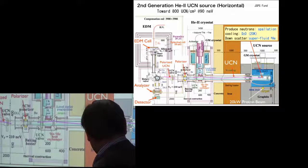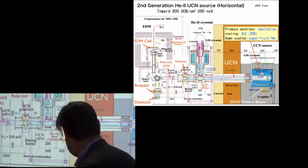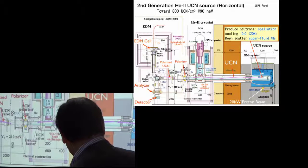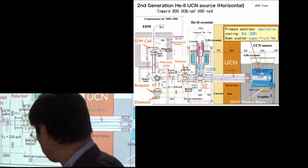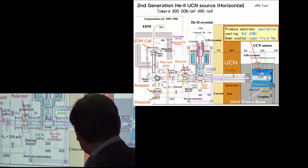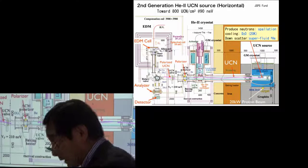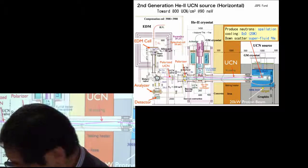And neutrons are slowed down by the graphite moderator, and then room temperature and low temperature heavy water. Then finally, the cold neutrons are downscattered by the superfluid, downscattered by the phonons in the superfluid helium-4.